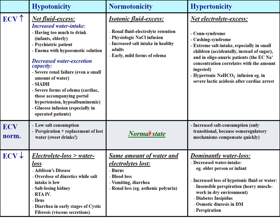Normal state is when fluid, ions, and volume are all balanced. Hypertonic normovolemia from excess salt is usually transient because the normal osmoregulatory system quickly corrects it. Hyponatremic hypovolemia occurs in Addison's disease, diuretic overdose with low salt intake, salt-losing kidney, type 4 renal tubular acidosis, ileus, early-stage diarrhea, or cystic fibrosis.